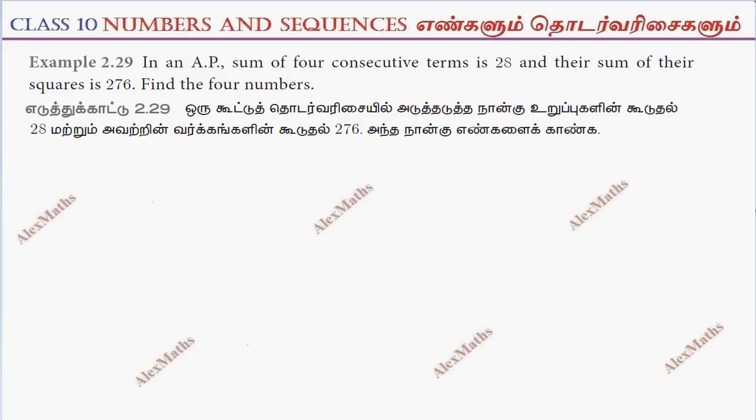Hi students, this is Alex here. Example 2.29: In an AP, sum of four consecutive terms is 28 and sum of their squares is 276. Find the four numbers.